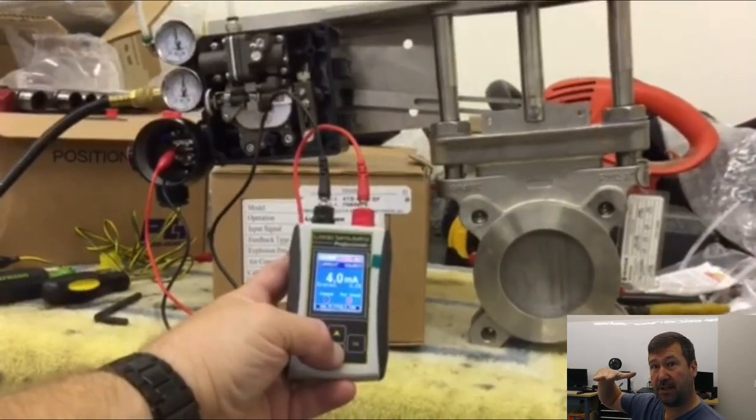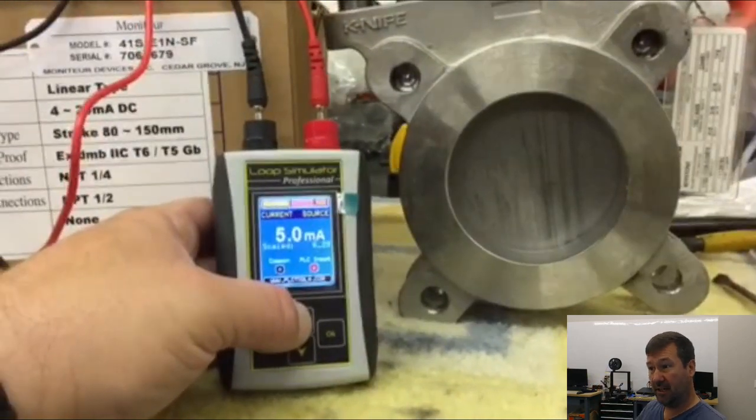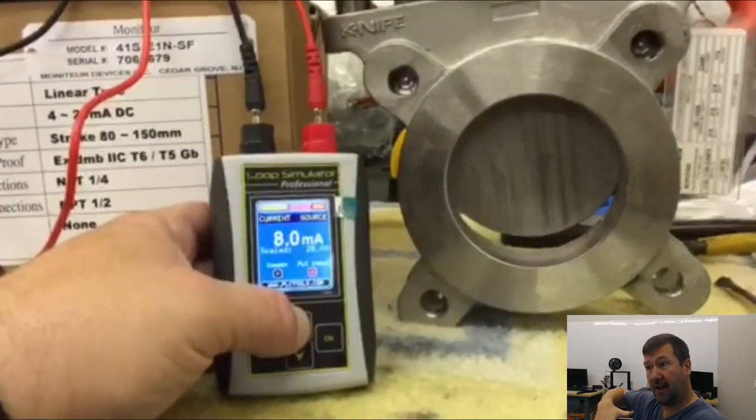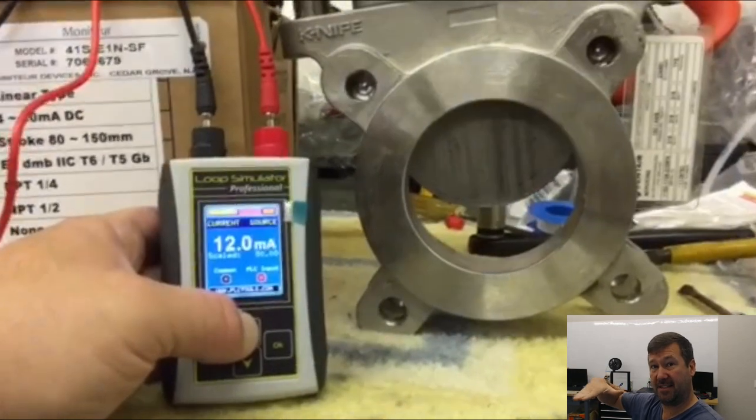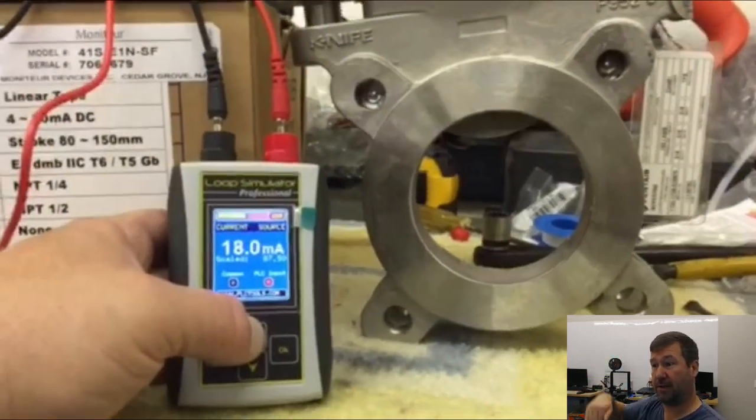How much the valve is open is determined by what milliamp you're sending to it. So four milliamps closes the valve, 12 milliamps has the valve halfway open, and 20 will have the valve all the way open.